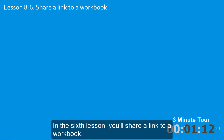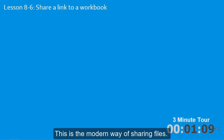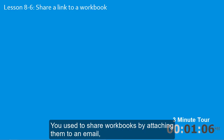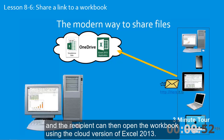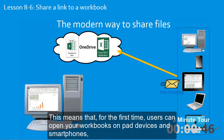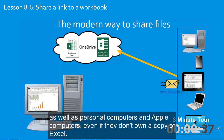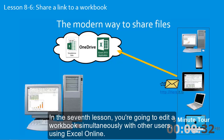In the sixth lesson, you'll share a link to a workbook. This is the modern way of sharing files. You used to share workbooks by attaching them to an email, but now you can send a link to the recipient pointing to the location of your workbook in the cloud, and the recipient can then open the workbook using the cloud version of Excel 2013. This means that, for the first time, users can open your workbooks on pad devices and smartphones, as well as personal computers and Apple computers, even if they don't own a copy of Excel.